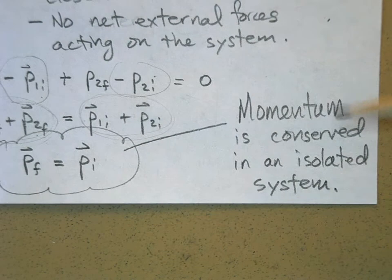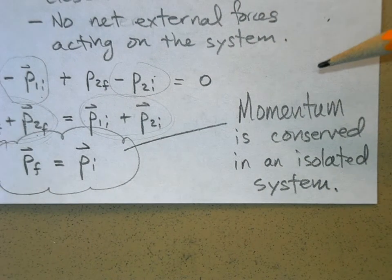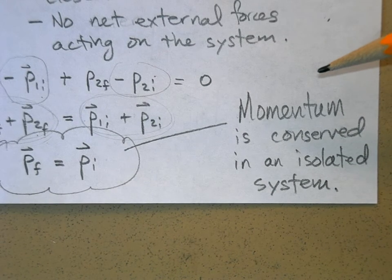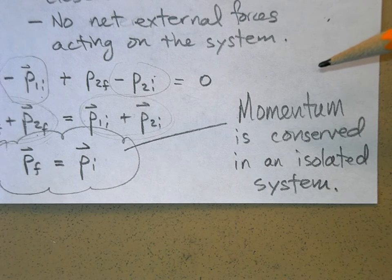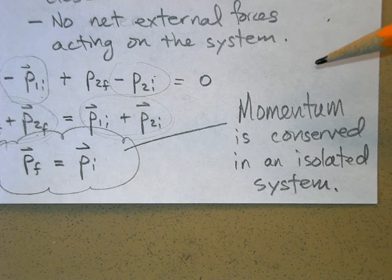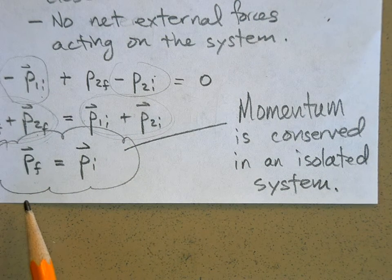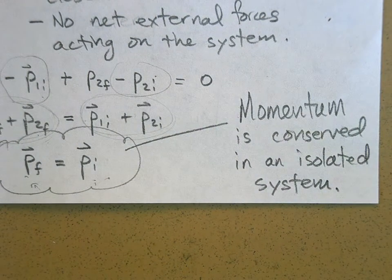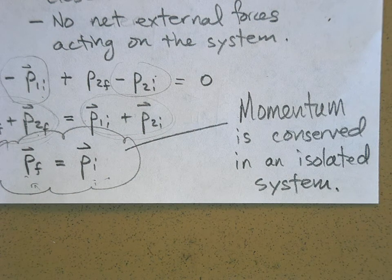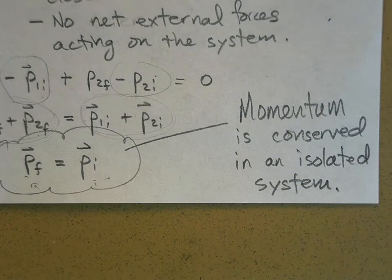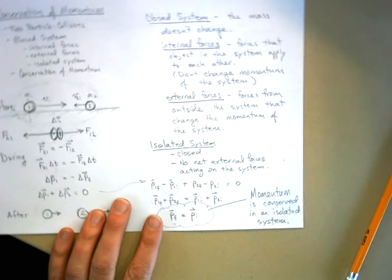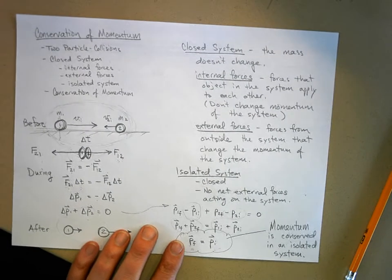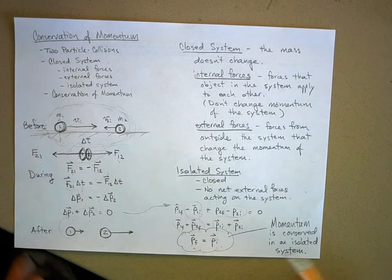We're going to be dealing with collision problems where we consider the two objects as an isolated system — no net force from outside acts on them, and we're not adding or subtracting mass. Therefore, whenever you have a collision problem you start with conservation of momentum. Next time we'll work a series of example problems using this. Read the example problems in the book and do the assigned work.